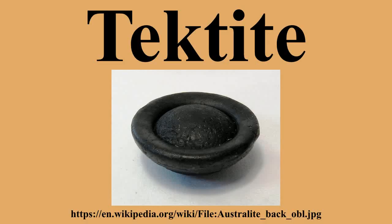Tektites are gravel-sized bodies composed of black, green, brown or gray natural glass formed from terrestrial debris ejected during meteorite impacts. They generally range in size from millimeters to centimeters; millimeter-sized tektites are known as microtektites. Tektites are characterized by a fairly homogeneous composition, an extremely low content of water and other volatiles, an abundance of lechatelierite, a general lack of microscopic crystals known as microlites, and chemical relation to local bedrock or local sediments, and their distribution within geographically extensive strewn fields.